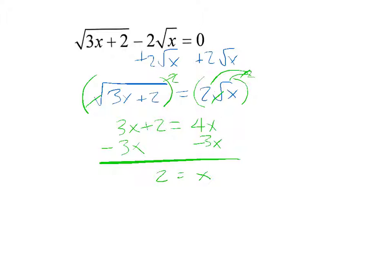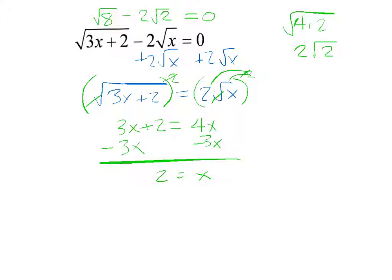I really do want to check this. If I plug in 2: 2 times 3 is 6, and 6 plus 2 gives the square root of 8, minus 2 square roots of 2. The square root of 8 has a 4 in it — that's 4 times 2 — and the square root of 4 is 2. So I've got 2 square roots of 2 minus 2 square roots of 2 equals 0. So this does work out — x equals 2 is my answer.